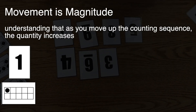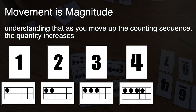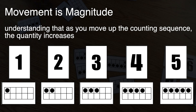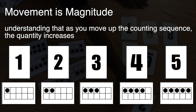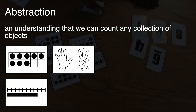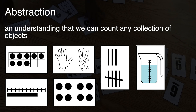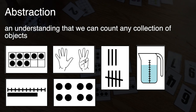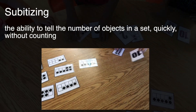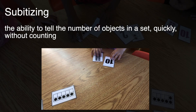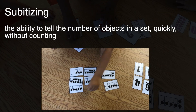Movement is magnitude — understanding that as you move up the counting sequence, the quantity increases. Abstraction — understanding that we can count any collection of objects. Subitizing — the ability to tell the number of objects in a set quickly without counting.